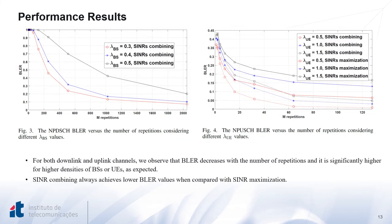In this slide, we have simulated the BLER versus number of repetitions for downlink and uplink scenarios. On the left side, we considered different base station densities for the downlink scenario, while on the right side, we considered different user equipment densities for the uplink scenario. We can see that the BLER decreases with increasing repetition factors, as expected, due to the increase in SNR. Moreover, the BLER is significantly higher when adopting higher densities due to increased interference. When comparing SNR combining with the maximization approach, SNR combining achieves lower BLER values.